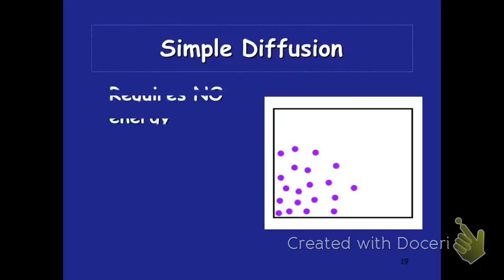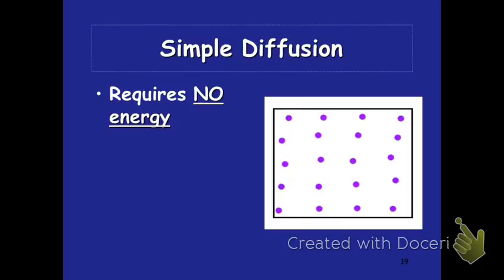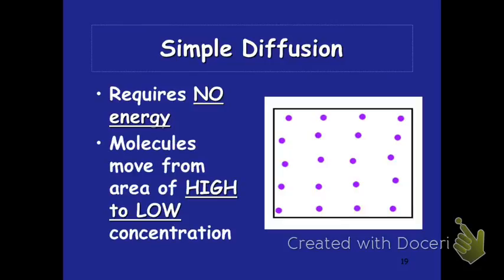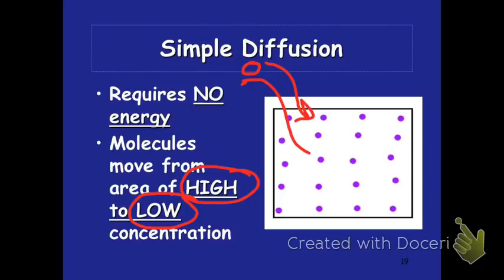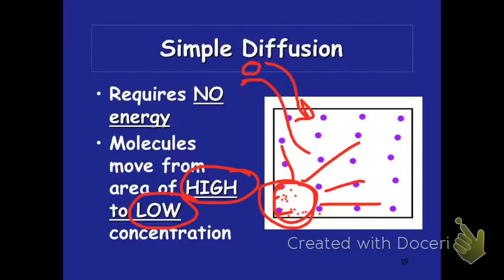The first type of transport is simple diffusion. This requires no energy — we're going to talk about transports that require energy and ones that don't, and this one does not require any energy. It's able to move molecules from a high concentration to a low concentration. Think about moving something down a hill: if you have a ball at the top of a hill and let go, it naturally rolls down from high altitude to low altitude. Same idea with simple diffusion — the molecules move from a high concentration and spread out. That requires no energy.